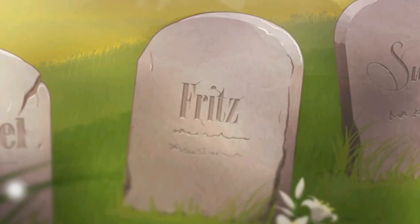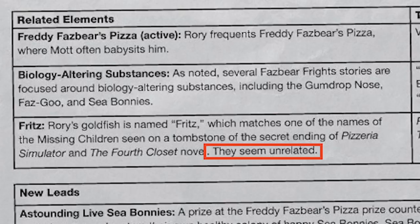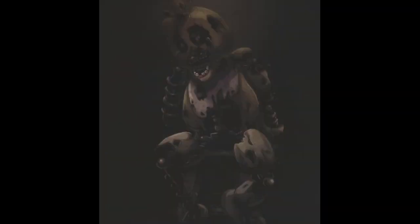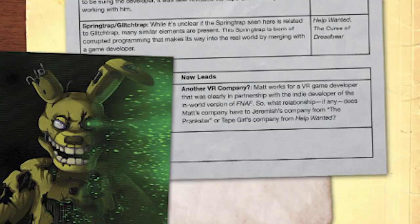Fritz: In Sea Bonnies, the Bonnies engulf Mott's pet goldfish named Fritz. Theorists believe this could parallel the events of the games, knowing there was a security guard and a missing child named Fritz. The Ultimate Guide, however, actually says the two elements seem unrelated. Logbook Chica: In What We Found, there is a broken Chica animatronic that people connect with the Chica image in the logbook. The Chica had never appeared in the games or books before, so it makes sense it would be part of the horror attraction.